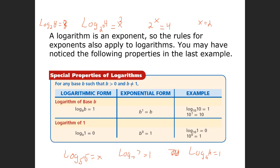The log base b of 1 is equal to 0. If I gave you the log base 5 of 1, well, 5 to what power equals 1? Anything to the zero power is 1, so 5 to the zero power is 1. That means the answer has to be 0. So those are some of the rules.